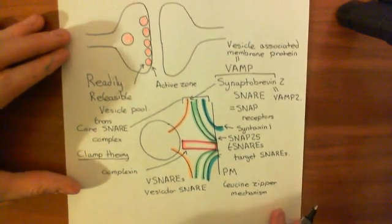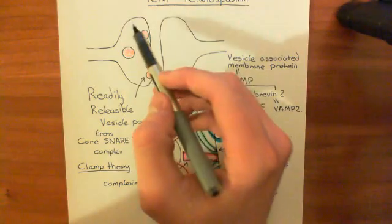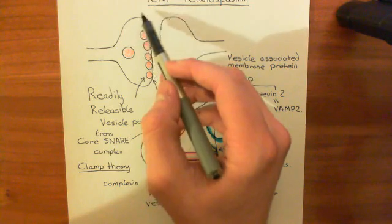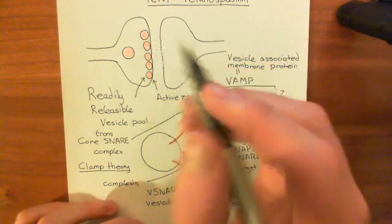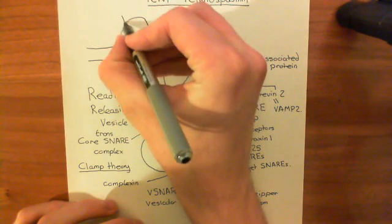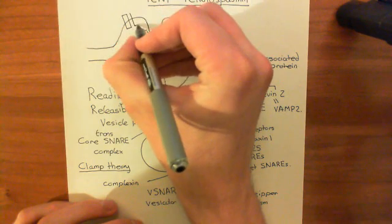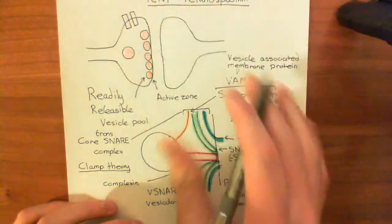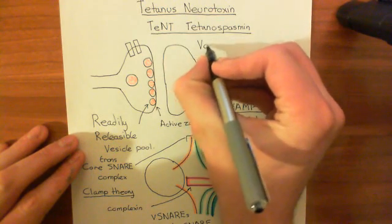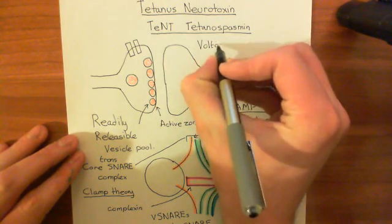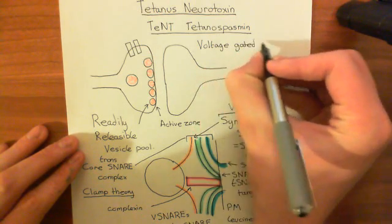When an action potential arrives at the axon terminal, you're going to get depolarization of the electrical potential difference across the membrane of the axon. That is going to activate specific channels in the membrane of the axon terminal — these channels are voltage-gated calcium channels.